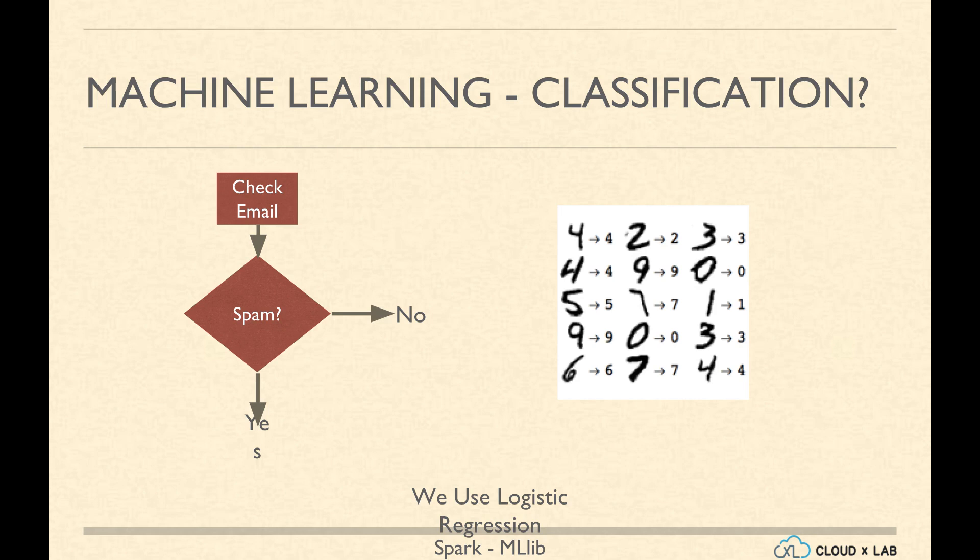First, the machine is provided with emails which are labeled as spam and not spam. Afterwards, the machine should classify if an email is spam or not spam. Another example is OCR, Optical Character Recognition.